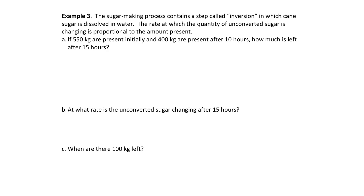Next example: sugar making. During the inversion step, cane sugar is dissolved in water. The rate at which unconverted sugar is changing is proportional to how much is there. This means we're dealing with another exponential model. The initial amount is 550 kilograms, and 400 kilograms will be present after 10 hours. We want to know how much is left after 15 hours.